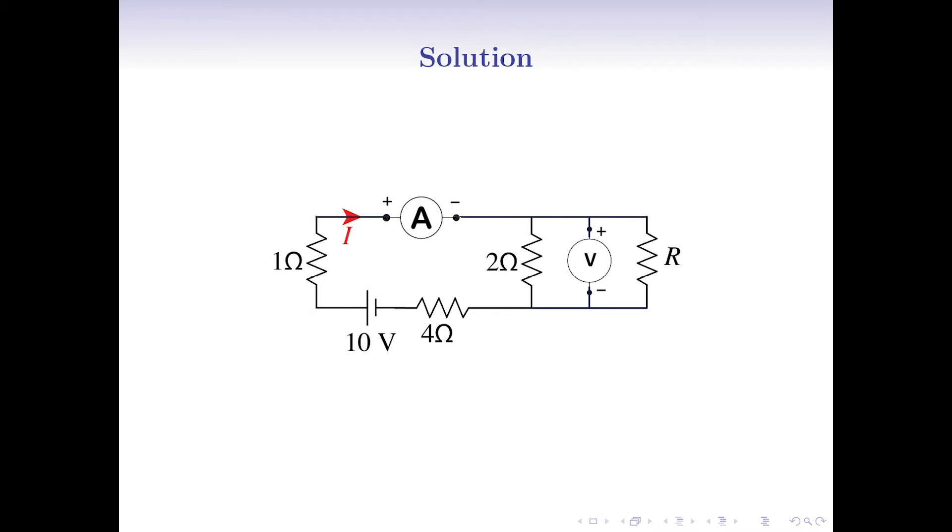First of all, it's said that the voltmeter has infinite resistance, so it's an open circuit. Always remember that zero resistance means a short circuit or connection by a pure wire, and infinite resistance means open circuit or disconnected nodes.